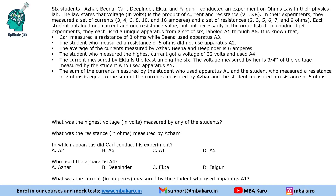Hello everyone, welcome to Aptitude Jab. This set says that there are 6 students who conducted an experiment on Ohm's Law in their physics lab. Ohm's Law states that V is equal to IR — that is, voltage is the product of current and resistance, where I represents current, R represents resistance, and V is the voltage.